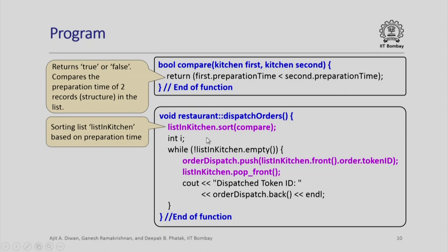An important point: earlier we also wanted to sort the array on the preparation time or dispatch time, and instead now we have a list. Notice this function restaurant dispatch_orders — it has list_in_kitchen.sort. How will it sort? It will sort using a comparison which is stipulated in another function. That function says: first.preparation_time less than second.preparation_time — if that is true it returns true, otherwise it returns false. Please note that this compare function itself is being passed as a function pointer in this sort statement, so the list will be sorted using this compare function.